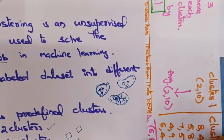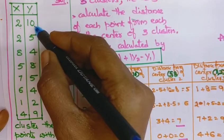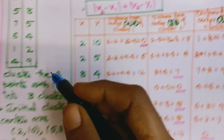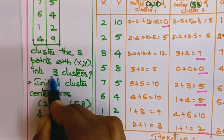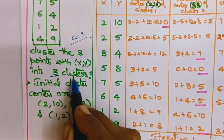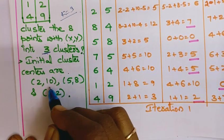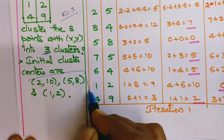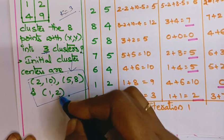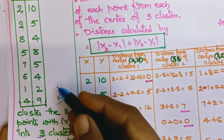Now we will look at a problem. The given data points are X, Y pairs. The question asks to cluster eight points into three clusters, so K equals three. The initial cluster centroids are given as (2, 10), (5, 8), and (1, 2).